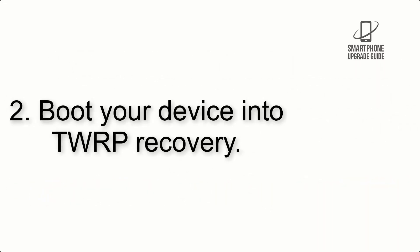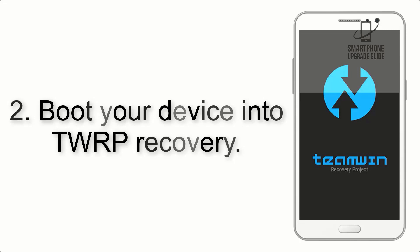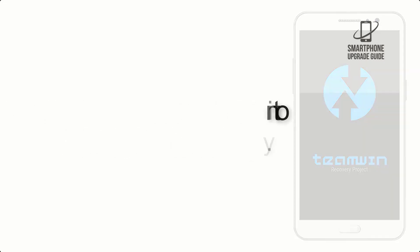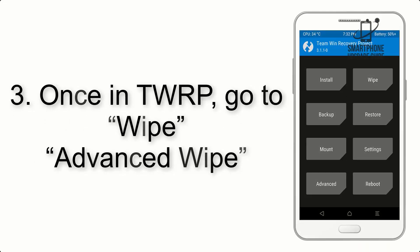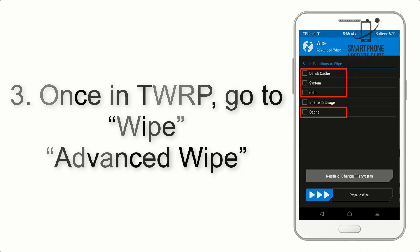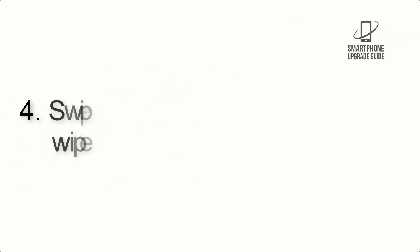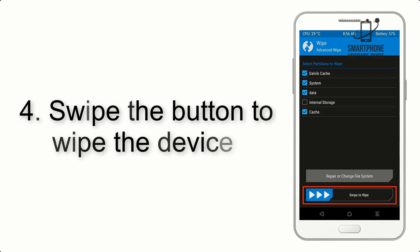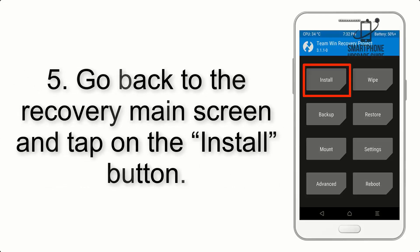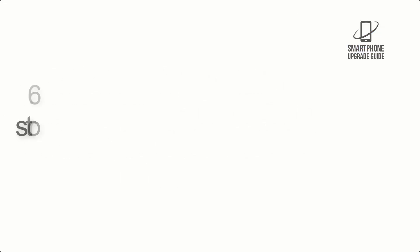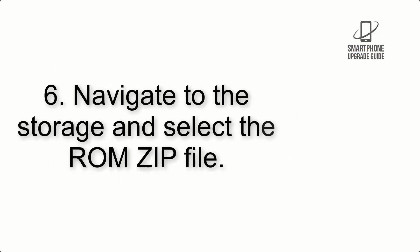Step 2: Boot your device into TWRP recovery. Once in TWRP, tap on Advanced Wipe and select the checkboxes as shown in the image, excluding internal storage. Step 4: Swipe the button to wipe the device. Step 5: Go back to the recovery main screen and tap on the Install button.